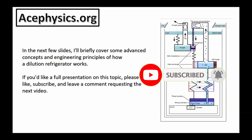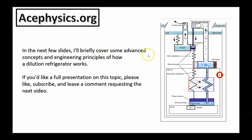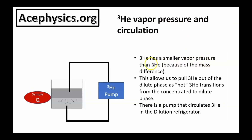We've covered the main material of this presentation. In the next few slides, I'll briefly cover some advanced concepts and engineering principles. Helium-3 has a smaller vapor pressure than helium-4 because of the mass difference. This allows us to pump helium-3 atoms out of the dilute phase as hot helium-3 transitions from the concentrated to the dilute phase, and then circulate it back to continually keep a small sample at these very low temperatures.